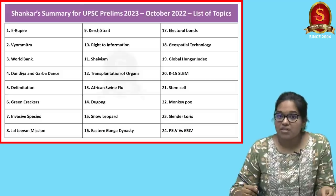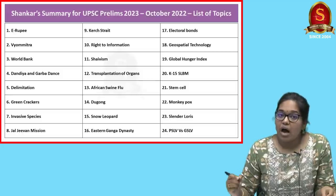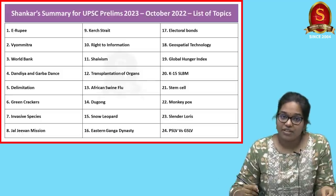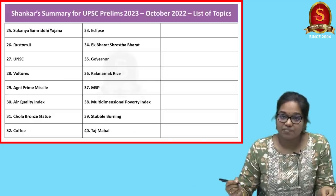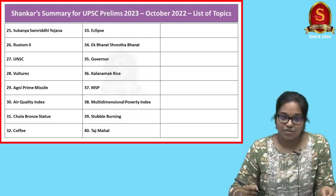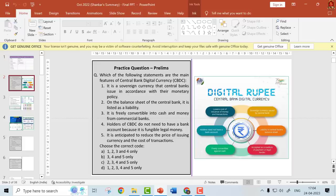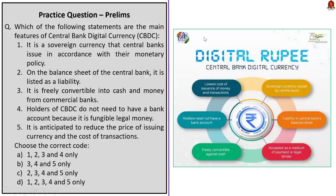These are some of the topics from October 2022 current affairs. Now we will take up the first question for our discussion. The question reads: which of the following statements are the main features of Central Bank Digital Currency? Statement No. 1: it is a sovereign currency that central banks issue in accordance with their monetary policy.